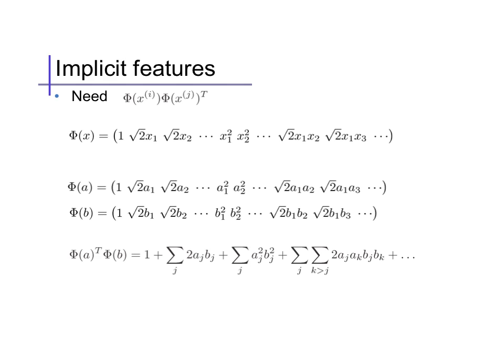And, we find that the dot product is the sum 1, from the product of 1's, plus the sum of 2 times a1b1, here, plus 2a2b2, here, and so on, forming this term.